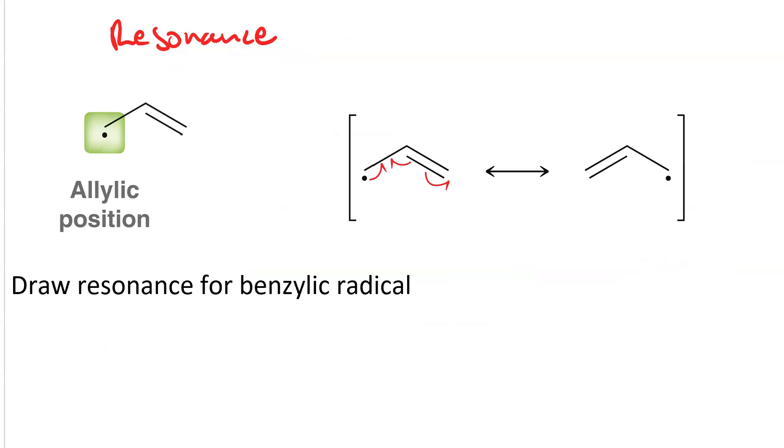Radicals are also stabilized by resonance. Here is an allylic radical. You can see it's in the allylic position because it is located on the carbon that is adjacent to a double bond.